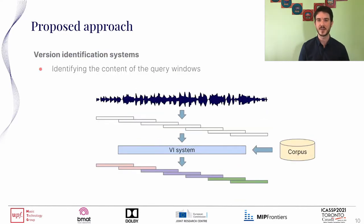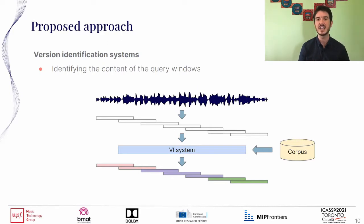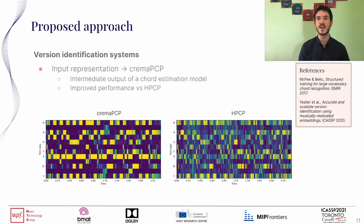For the version identification step, we process the long audio queries using overlapping sliding windows, and we compare the content of each window with the tracks in our reference corpus using a version identification system. At the end of this process, we identify each window as one track or another from our reference corpus. For this, we first extract a chroma feature from both the windows and reference tracks that we call CREMA-PCP.